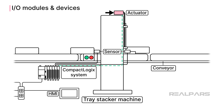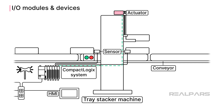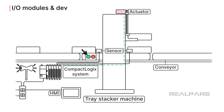The actuators in this application are wired to output modules. The PLC controls the process by sending electrical signals to these devices. Using these electrical signals, the PLC can control the actuators to grab the tray or sound a horn to warn operators that the machine is about to start.